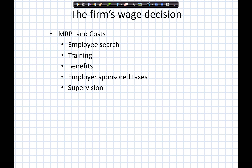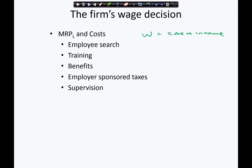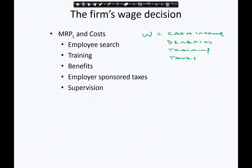Let's consider a little further what we're talking about when we think about marginal revenue product of labor and wage. Wage is a number of things, of course. Wage is going to equal cash income — the gross income that shows up on our paychecks. But it's also going to equal much more. When we think about the wage, we're really thinking about total compensation: benefits, training costs, various forms of taxes — and those are obvious to us.